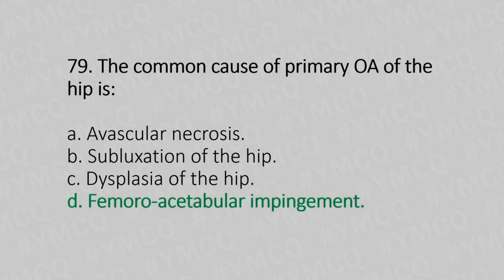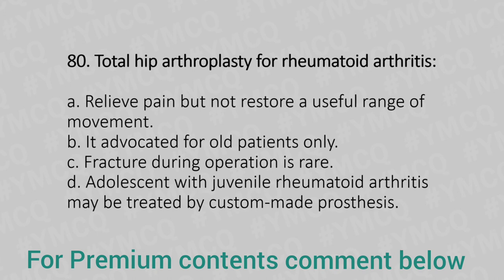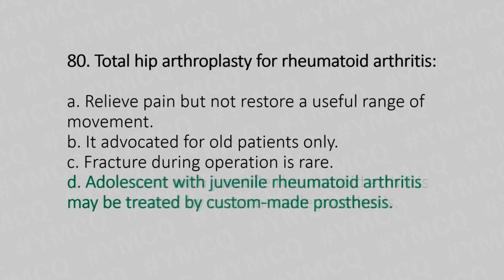Now let's move to question number 80. Total hip arthroplasty for rheumatoid arthritis. Option A: relieves pain but does not restore usual range of movement. Option B: advocated for old patients only. Option C: fracture during the operation is rare. Option D: adolescents with juvenile rheumatoid arthritis may be treated by custom-made prostheses. And the answer is Option D, adolescents with juvenile rheumatoid arthritis may be treated by custom-made prostheses.